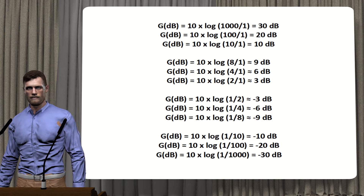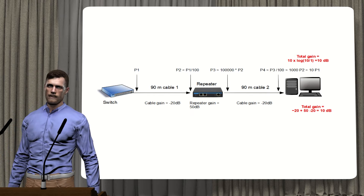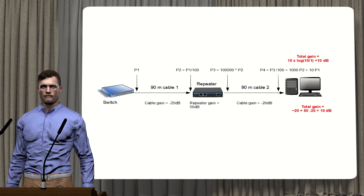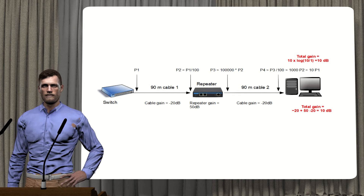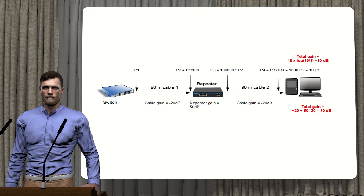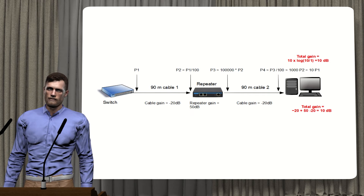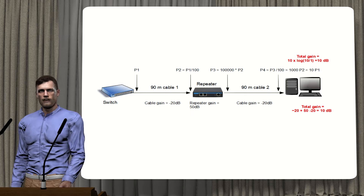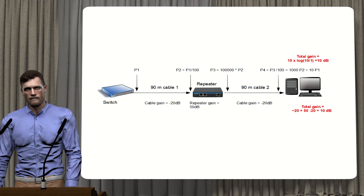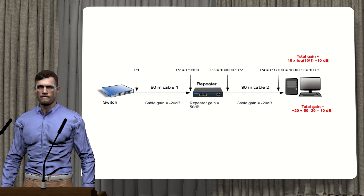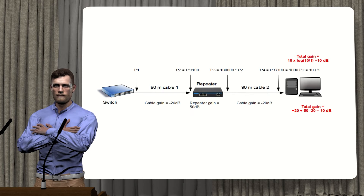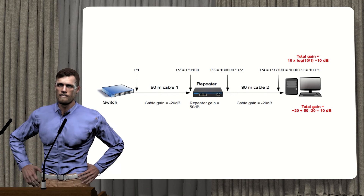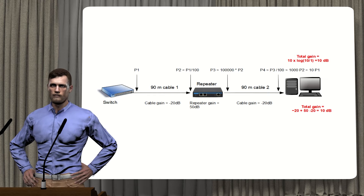Let's see a practical example. A user wants an Ethernet network connection in his garden, about 180 meters from the modem. He installs a simple repeater in the middle. The cables are somewhat damaged, so signal power is divided by 100 in each section, while the repeater multiplies power at its output by 100,000. We can calculate the total gain either by multiplying the individual gains or by adding them in dB — the result coincides, but adding gains or subtracting dB attenuations is much easier.